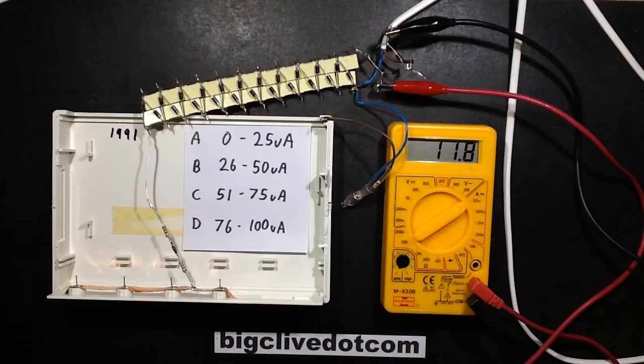The current peaks and then settles down to typically about 7 microamps.